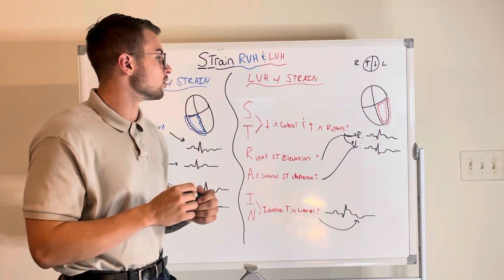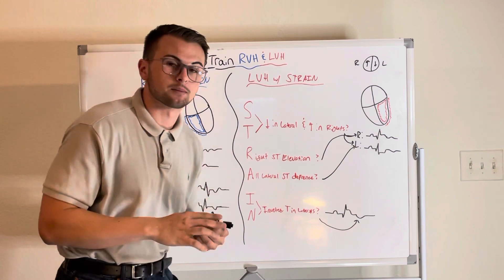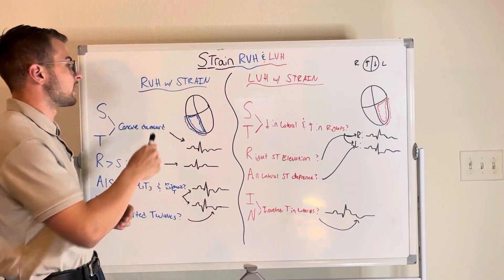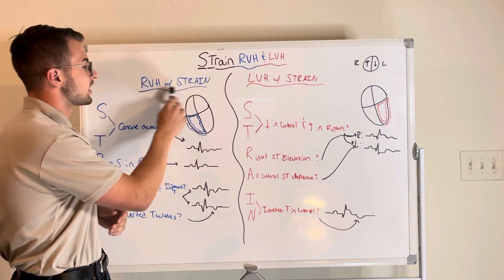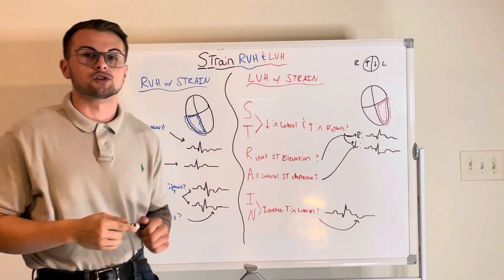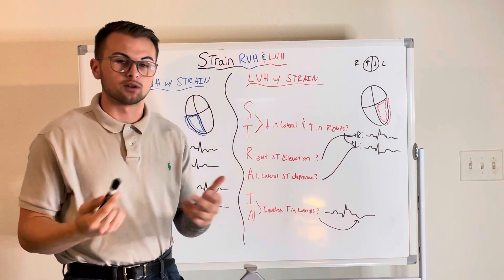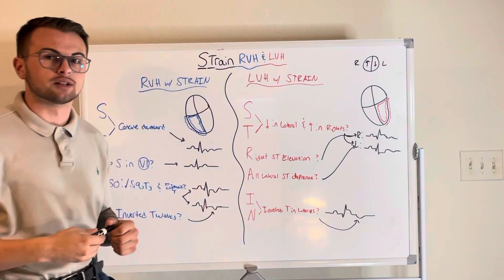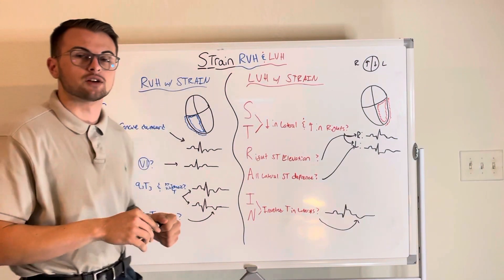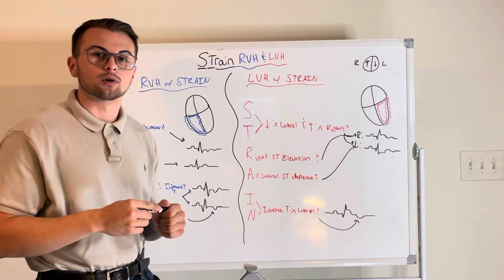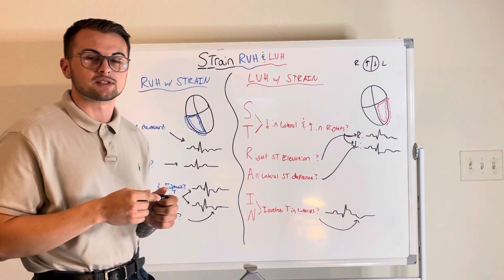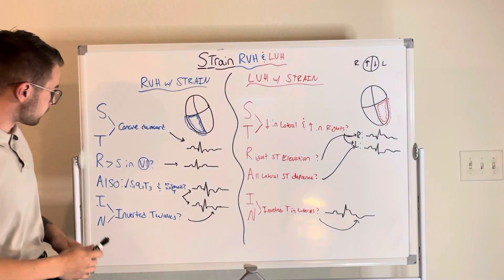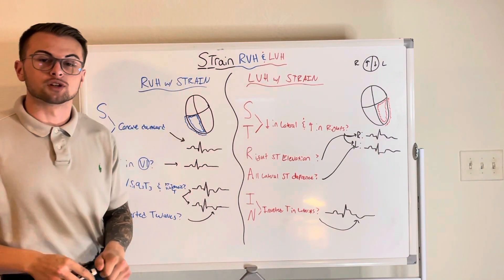A good rule to memorize right off the bat is that you can't diagnose right ventricular hypertrophy with strain if you don't have right ventricular hypertrophy, which is why I included it into the criteria. So how will we remember all the manifestations of strain? All we have to do is remember the word STRAIN.